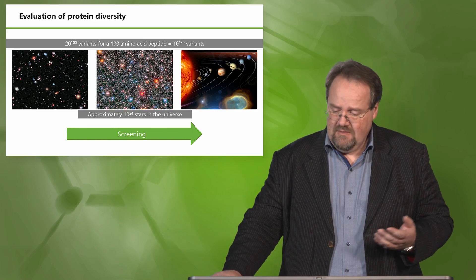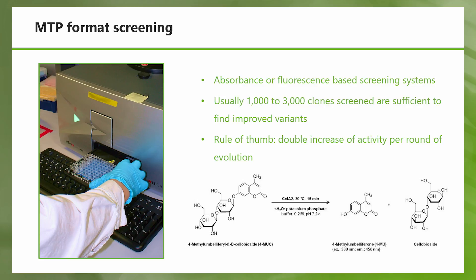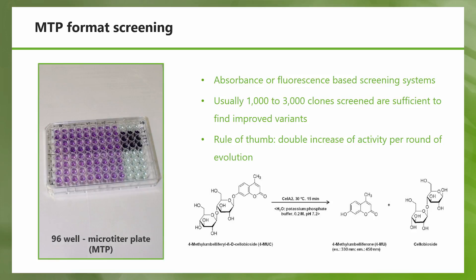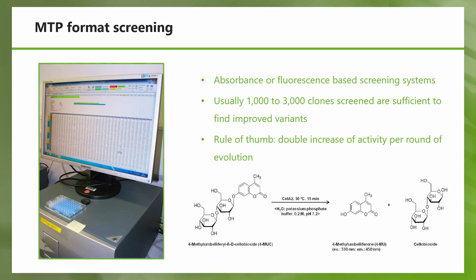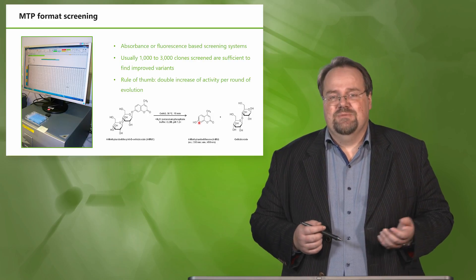Where are we now standing with high throughput screening technologies? The standard way of doing that are micro titer plate based screening systems. You see the micro titer plate, there are available formats of 48, 96, 384, 1536 wells, and each well represents a reaction compartment where one enzyme variant does a conversion. Here it's shown the conversion of the 4-MUC substrate by a cellulase. The 4-hydroxy-umbelliferyl-coumarin derivative is generated which is fluorescent, and with the fluorescence generated you can correlate this to the activity of the enzyme. These micro titer plate formats are still the standard format for most directed evolution experiments.